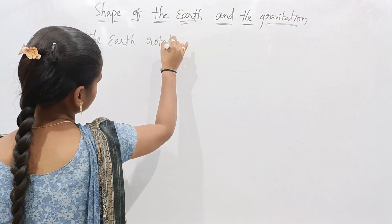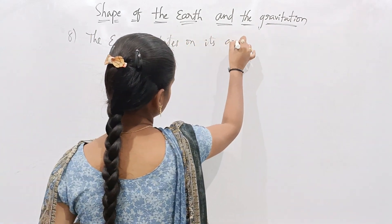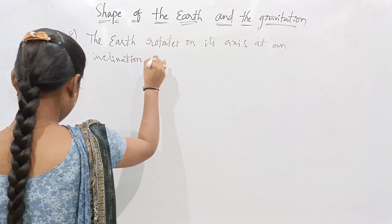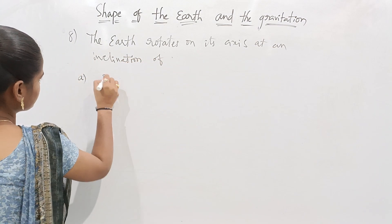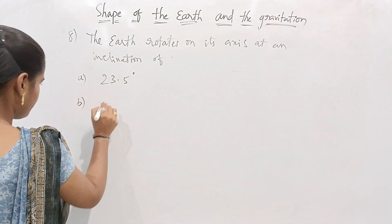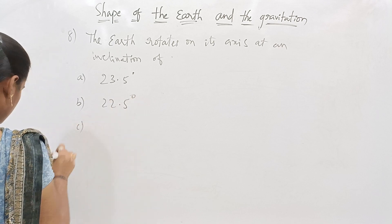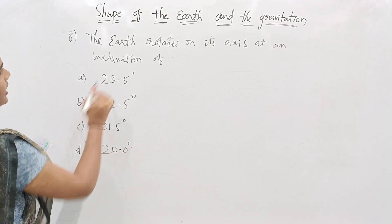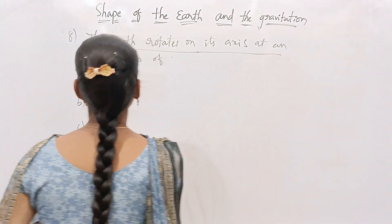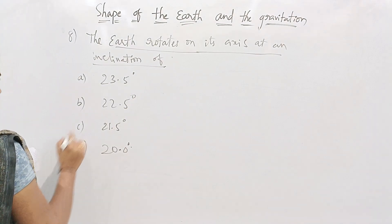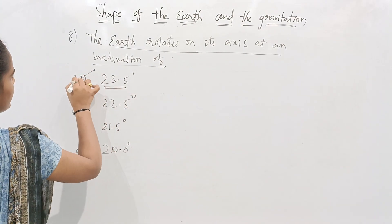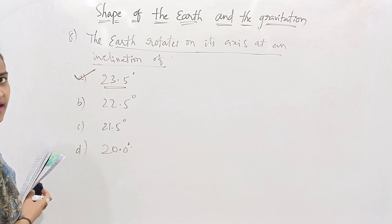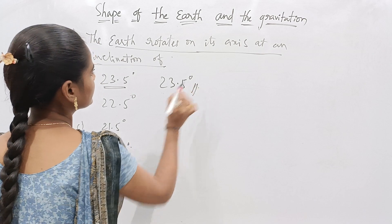The eighth question is: the earth rotates on its axis at an inclination of — Option A: 23.5 degrees; Option B: 22.5 degrees; Option C: 21.5 degrees; Option D: 20.0 degrees. The earth rotates on its axis at an inclination angle of 23.5 degrees, so Option A is the correct answer.